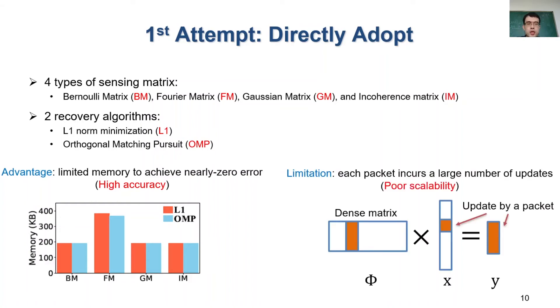However, the recommended matrix suffers from poor scalability. In particular, each packet updates one element in the original vector X, and the recommended sensing matrix is usually a dense matrix. So we need to update a large amount of elements in the measurement vector Y. This is infeasible because network devices have limited computational resources.